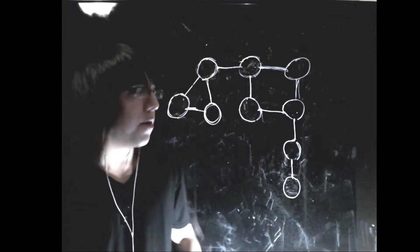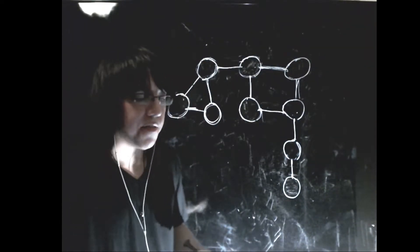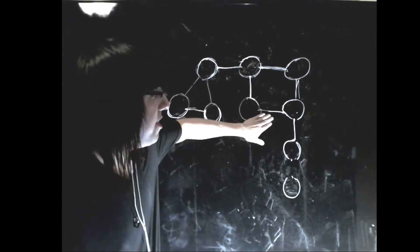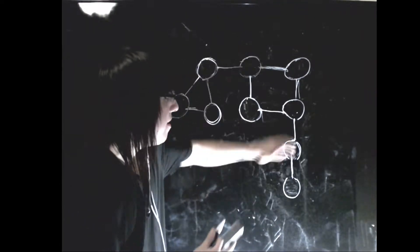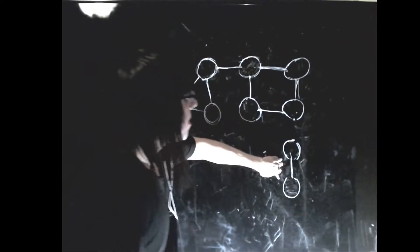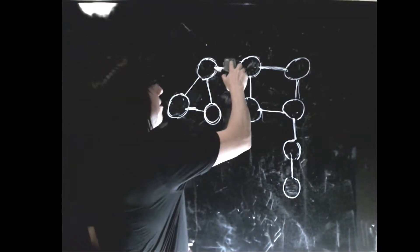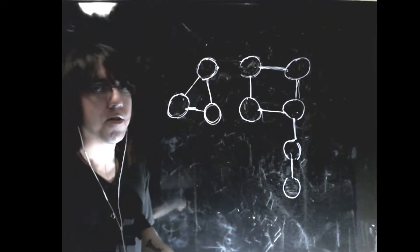I'm going to explain how to do the Critical Connections in a Network problem on LeetCode. I have an undirected graph here. A critical connection is any edge that, if removed, will prevent some nodes from reaching each other. For example, if I remove this edge, these nodes can no longer reach each other — therefore that is a critical edge. The same applies to these other edges I'm demonstrating.